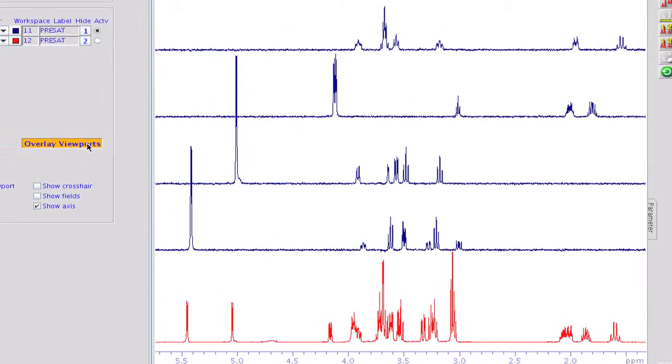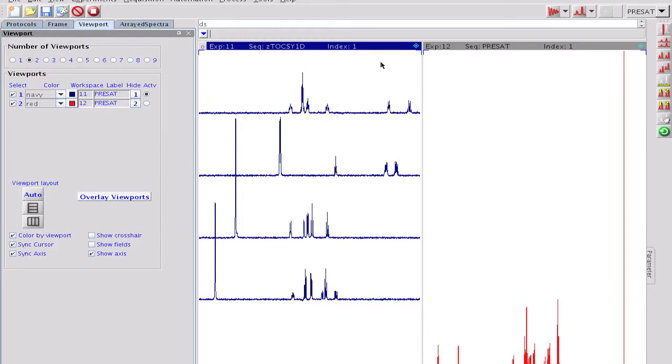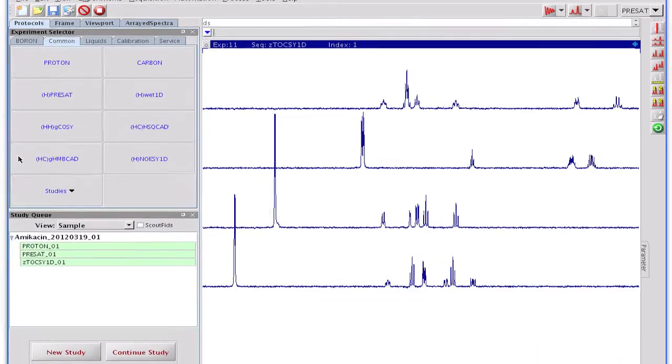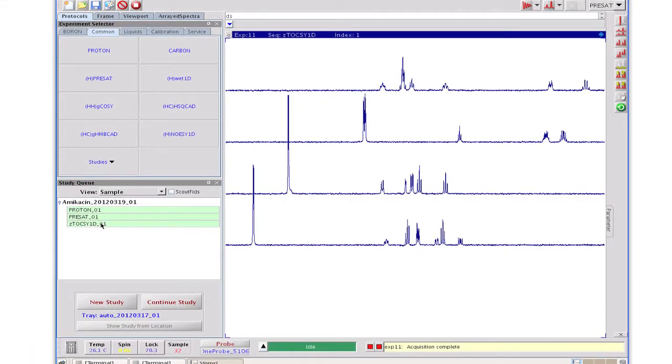During the setup procedure, we have seen that the mixing time can be arrayed. A selective 1D z-toxy experiment has been recorded with this option in advance, concentrating only on the low-field anomeric sugar proton at 5.5 ppm.